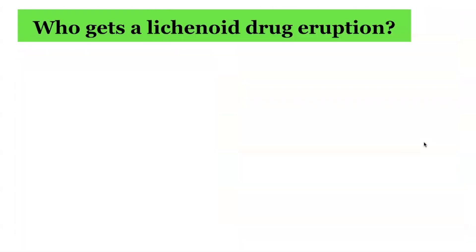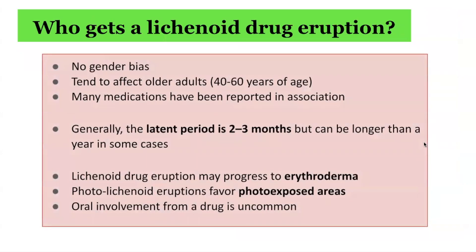Who is susceptible to a lichenoid drug eruption? There is no significant gender bias from the studies which have looked into lichenoid drug eruptions. This condition tends to affect older adults in the age group between 40 to 60 years of age, and many medications have been reported to be associated with it. Generally, the latency period is two to three months — meaning once you take a culprit medication, the skin changes may not occur until two to three months later.